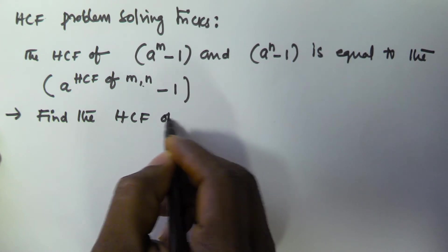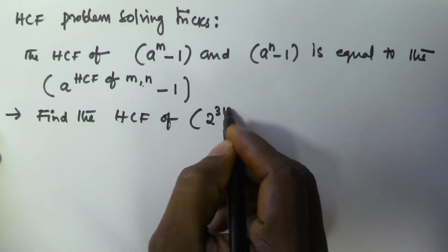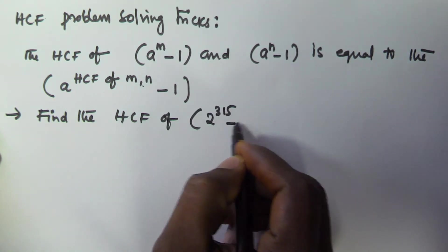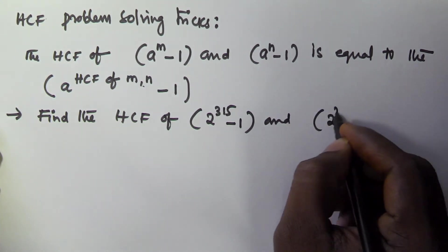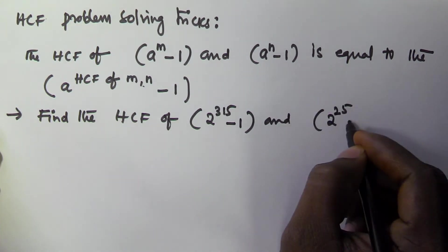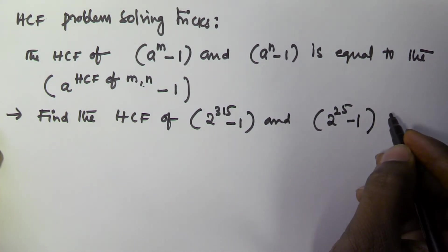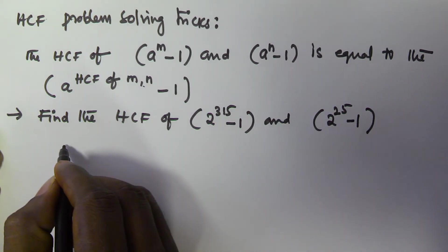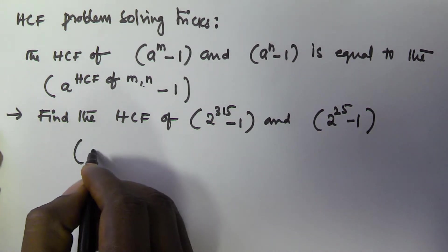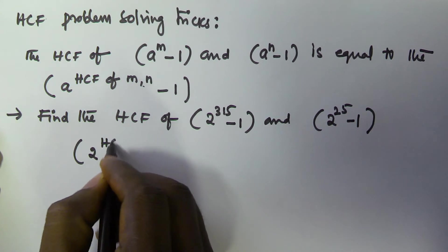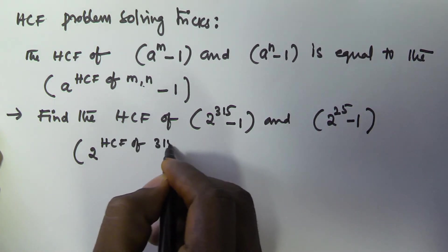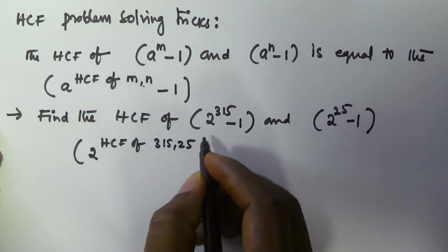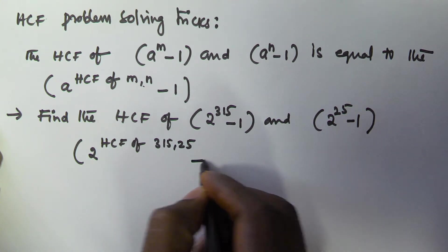...2 to the power of 315 minus 1, and 2 to the power of 25 minus 1. So this is going to be equal to 2 to the power of HCF of 315 and 25, minus 1.